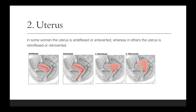In some women, the uterus is anteflexed or anteverted, whereas in other women the uterus is retroflexed or retroverted. An anteflexed and anteverted uterus is tilted towards the urinary bladder or forward in the abdominal cavity, whereas a retroflexed and retroverted uterus is tilted away from the urinary bladder or backward in the abdominal cavity.